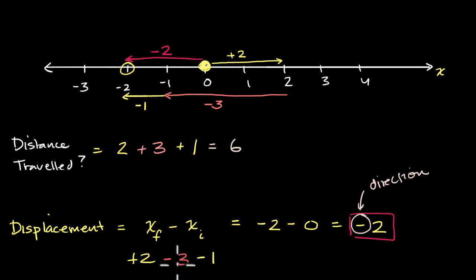And if you were to add all of these together, you are going to get a net displacement of negative two. But an easier way was just, what's your final position minus your initial position?